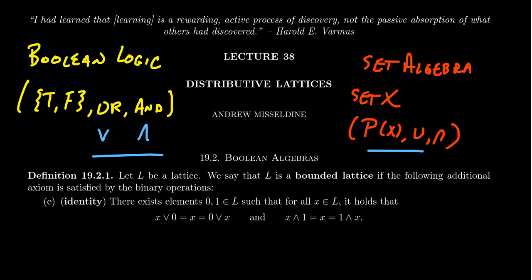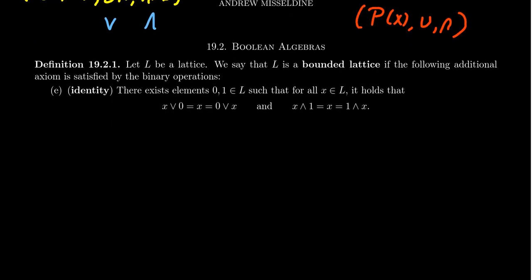It turns out there's more structure beyond just the lattice structure. Both set algebra for some power set and Boolean logic are examples of Boolean algebras — there's more structure just beyond what the lattice structure is. We want to gather those missing pieces in this lecture. In this video, we want to talk about the idea of identities — in particular, what does it mean for a lattice to be bounded?